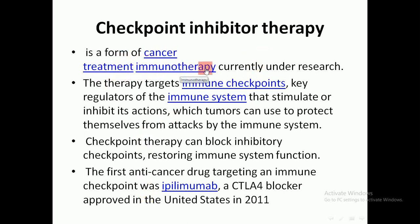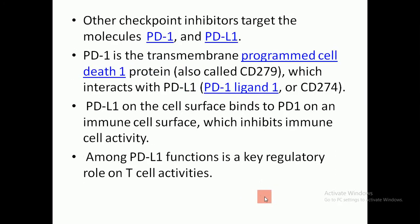Checkpoint inhibitor therapy is a form of cancer treatment and immunotherapy currently under research. This therapy targets immune checkpoints — key regulators of the immune system that stimulate or inhibit its action — which tumors exploit to protect themselves from immune attack. Checkpoint therapy can block inhibitory checkpoints, restoring immune system function. The first anti-cancer drug targeting an immune checkpoint was ipilimumab, a CTLA-4 blocker approved in the United States in 2011.